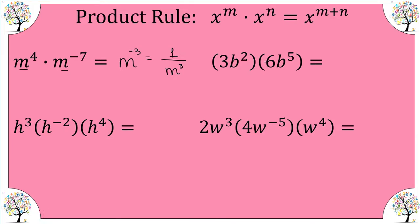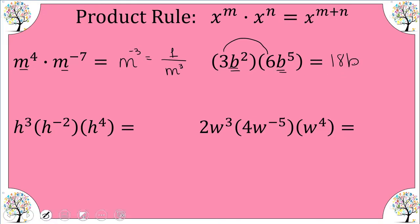Our second example: we have three b squared times six b to the fifth. You simply multiply three times six as you've always done, and now we apply the product rule because we have like bases — a base of b. We add the exponents two and five, which gives us seven, so our result is 18b to the seventh.